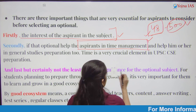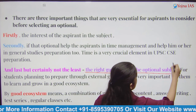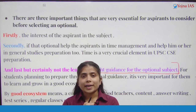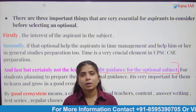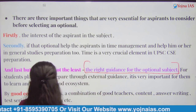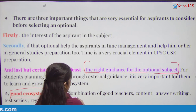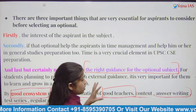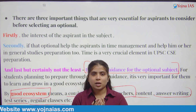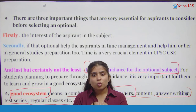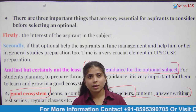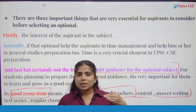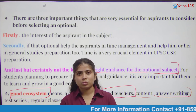The next important point is right guidance in the optionals. What happens if you don't have guidance? It is not right. So before choosing any optional, you have to get guidance from seniors or teachers. And last is your good ecosystem — look at the combination of good teachers, content, answer writing, test series, and regular classes. All these things make a good ecosystem, which is most important for scoring well in optionals.